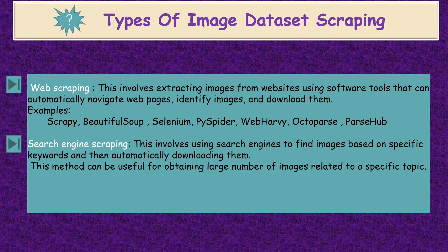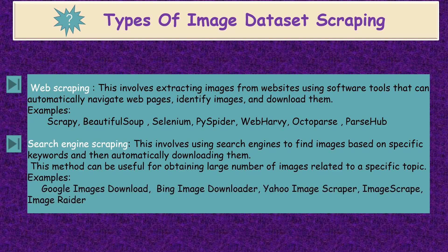The next type of image dataset scraping is search engine scraping. This involves using search engines to find images based on specific keywords and then automatically downloading them. This method can be useful for obtaining a large number of images related to a specific topic. Examples are Google Images Download, Bing Image Downloader, Yahoo Image Scraper, Image Scrap, and Image Writer.